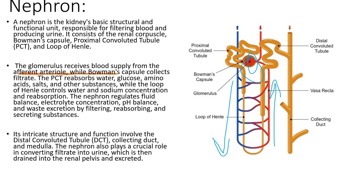Finally, we have the collecting duct. The collecting duct receives the filtrate from multiple nephrons. It carries the processed filtrate or urine through the medulla of the kidney, allowing for the final adjustment of water and electrolyte absorption. The collecting ducts ultimately converge to form larger ducts that empty into the renal pelvis.